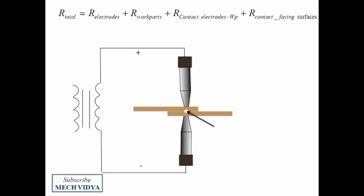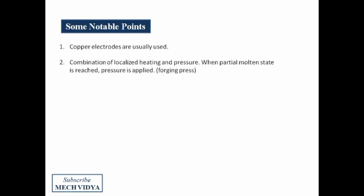Some notable points about this process: The electrodes are usually made of high conductivity metals such as copper, so that the resistance in the electrodes becomes very low. Current flows at very high amperage. The process is a combination of pressure and heat and is used to join thin sheet metals.